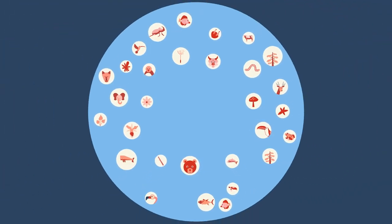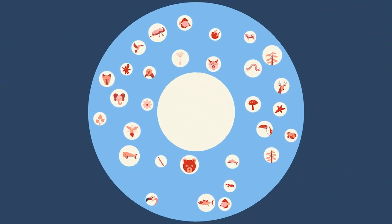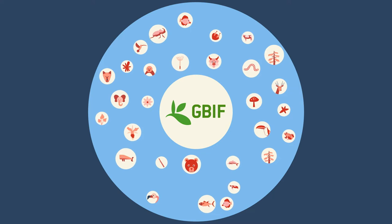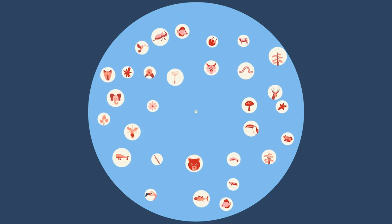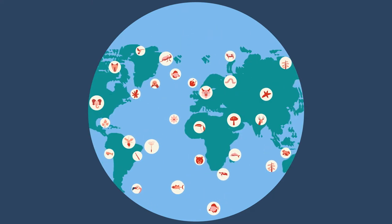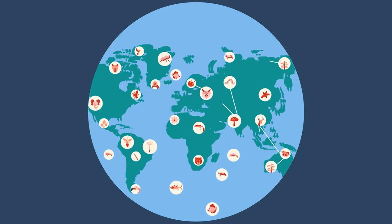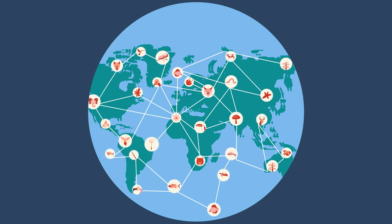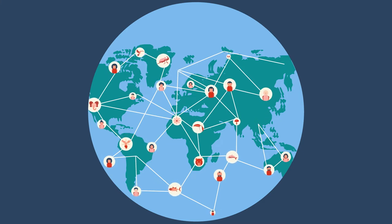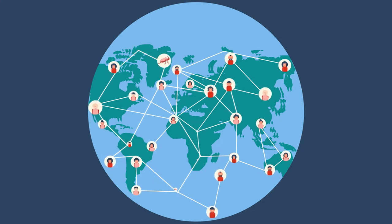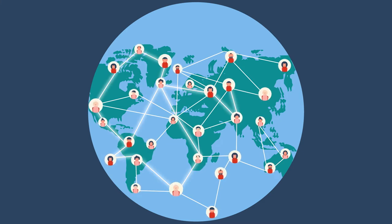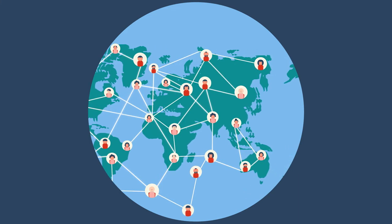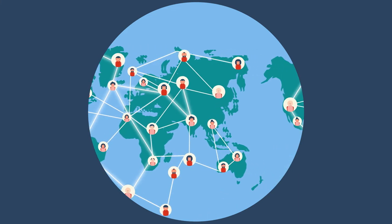The Global Biodiversity Information Facility is a network of governments and organizations that enables the publication of data and shares it with the world, making information about biodiversity available online for researchers and citizens, regardless of their location.